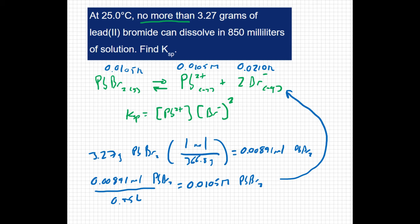Now we have all the pieces, we can put it together. I can now say that my Ksp is going to equal the concentration of the lead, which we know to be 0.0105 molar, times the concentration of the bromide, 0.0210 molar squared.